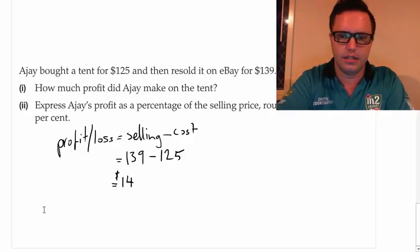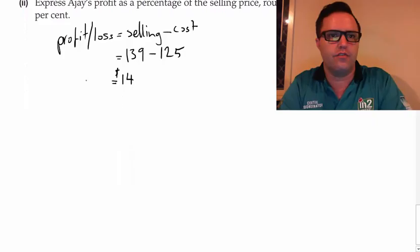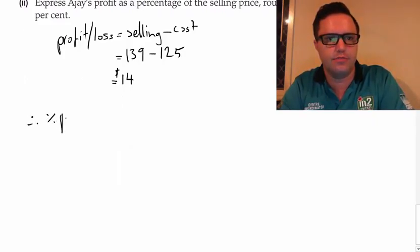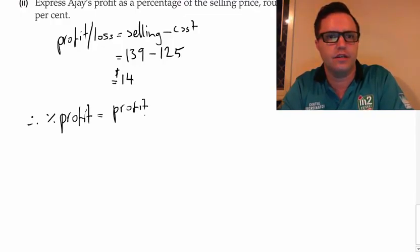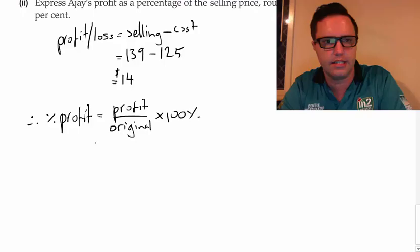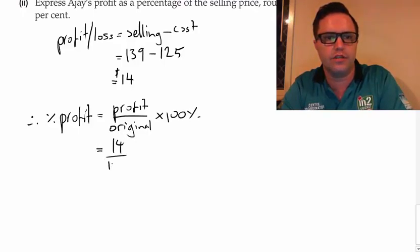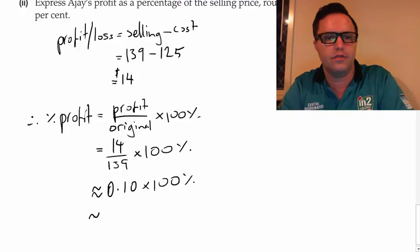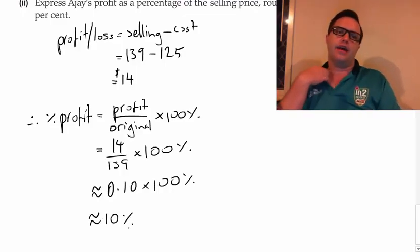And we're going to write our formula again for therefore our percentage profit. Profit is equal to the profit divided by the original multiplied by 100%. And the profit was $14. The original is $139 times 100%. I'm sure you can see that 14 over 139 is basically 10%. So 0.10 times 100%, which is about equal to 10%.